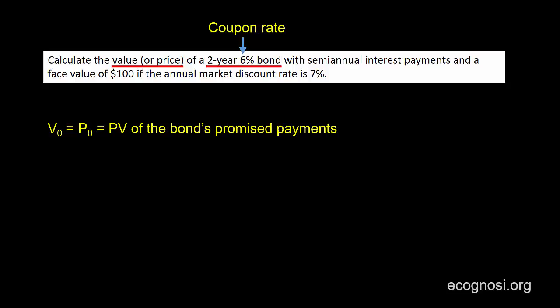Moving on, we have semi-annual interest payments, and this is the same as saying that the periodicity equals 2. In other words, this bond pays interest or coupons once every 6 months, or twice per year, and since it matures in 2 years, it will make 4 payments in total.